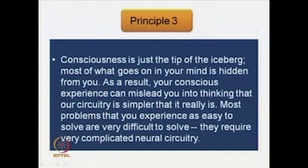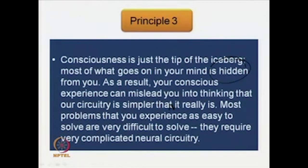We now come to principle number three of evolutionary psychology as given to us by Leda Cosmides and John Tooby. In their words, the third principle goes like this: it has to do with our consciousness. Consciousness is just the tip of the iceberg. Most of what goes on in your mind is hidden from you. As a result, your conscious experience can mislead you into thinking that our circuitry is simpler than it really is. Most problems that you experience as easy to solve are very difficult to solve — they require very complicated neural circuitry.